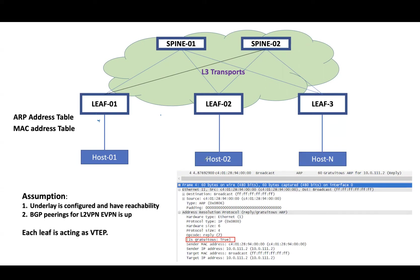Let's say host 1 wants to communicate with host 2. Host 1 and host 2 are in the same VNI. When leaf 1 receives the traffic from host 1, it will encapsulate the traffic and send it directly to leaf 2, because leaf 1 already knows that host 2 is behind leaf 2 via control plane learning. This is how EVPN works. Hope this session was useful — thank you.